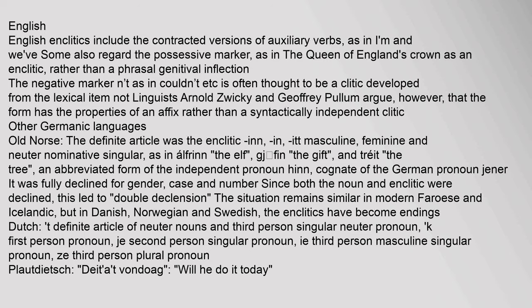In Old Norse, the definite article was the enclitic '-inn' / '-in' / '-itt' (masculine, feminine, and neuter nominative singular), as in 'alfr-inn' ('the gift'). This was an abbreviated form of the independent pronoun 'hinn', cognate of the German pronoun 'jener'. It was fully declined for gender, case, and number, since both the noun and enclitic were declined, leading to double declension.